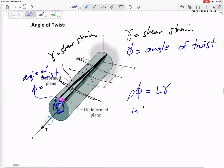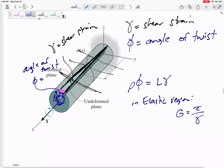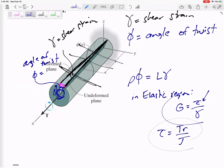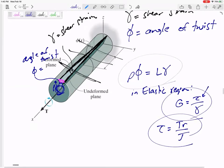And in the elastic region, G is tau over gamma. G is shear stress over shear strain. And we know that tau is TR over J. If we took these three, I think we could do that, not too hard. If we took those three and substituted in, we would get angle of twist. Here we go.